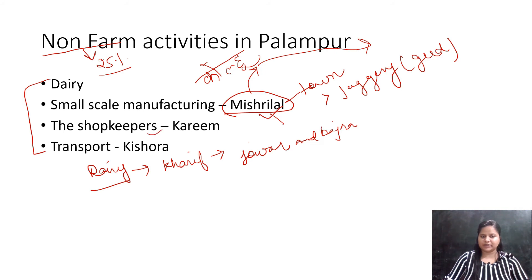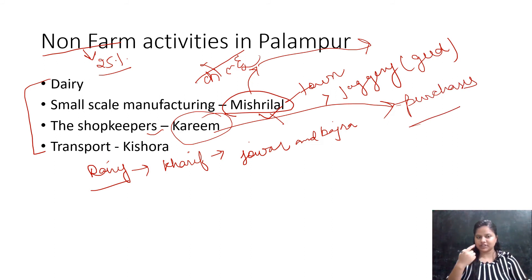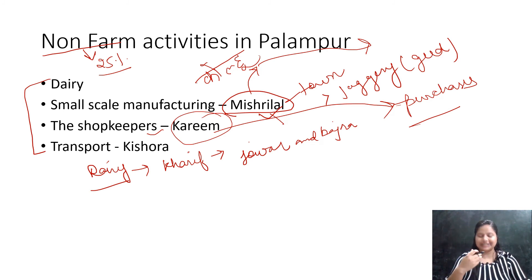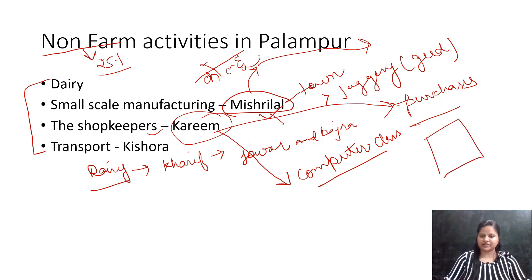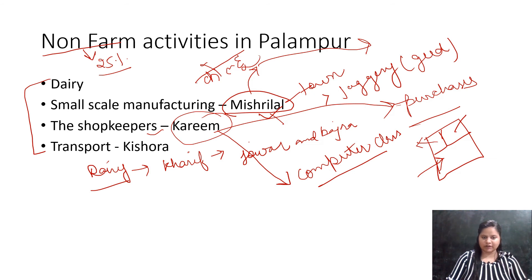Apart from dairy and manufacturing, there is the shop keeper who purchases goods from the city and sells them to villagers. These goods mainly include grocery items — rice, wheat, toothpaste, tea, and daily necessity items. There is also Karim, who owns a computer class. Karim noticed that people from the village travel to Shahpur and nearby small towns to learn computers. Since he had knowledge of computers, he opened a shop in the market, hired two more qualified ladies, and started a coaching center which eventually did very well.